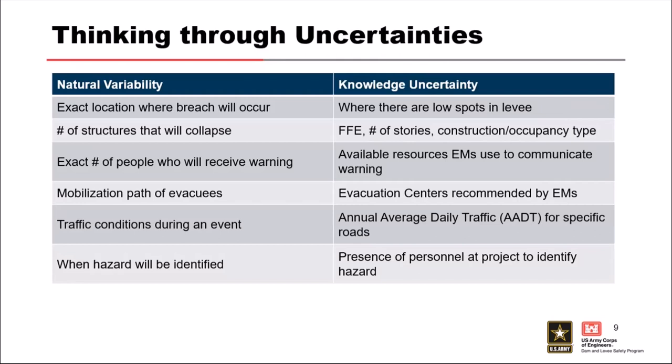Thinking about uncertainty as a breakdown: natural variability examples include the exact location where a breach would occur. We might know it could be left or right embankment, but not exactly where — and that can matter for a very long dam or levee. The number of structures that collapse also has natural variability. On the knowledge uncertainty side, where the low spot will be — we can actually find that with LiDAR or a survey, identify the most likely overtopping location, and let that drive other analyses. Some things we can reduce, some we can't.